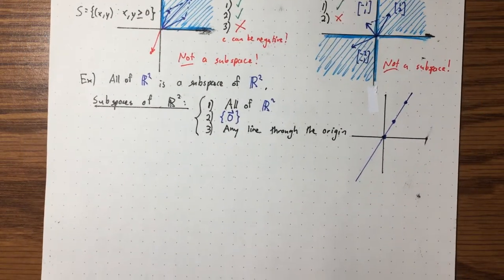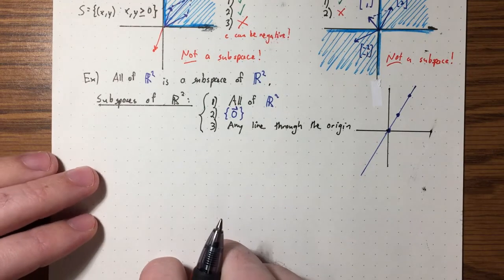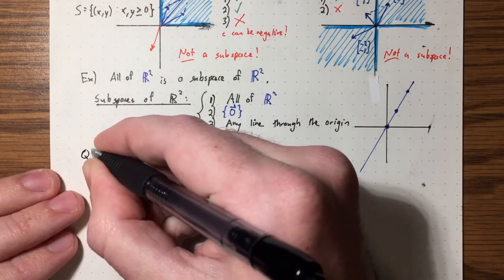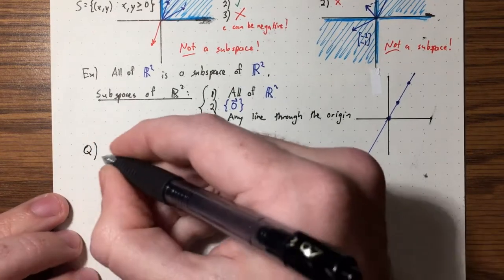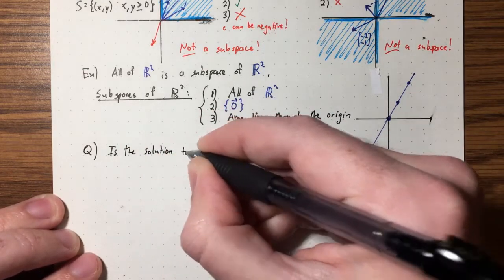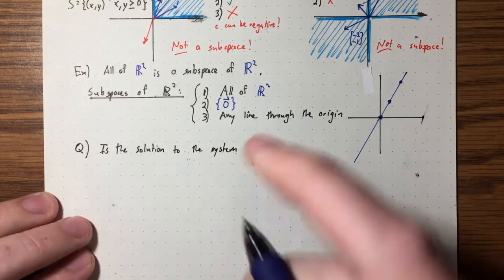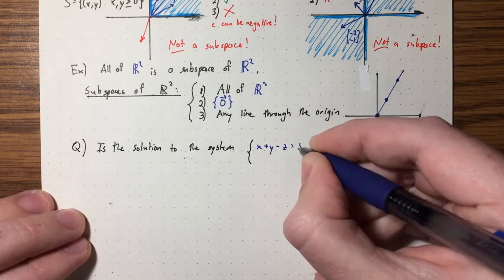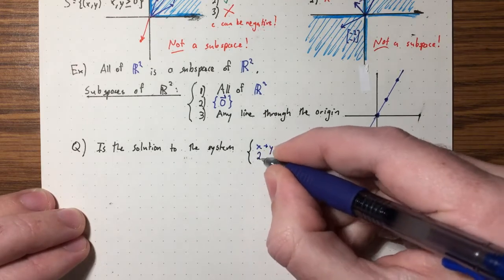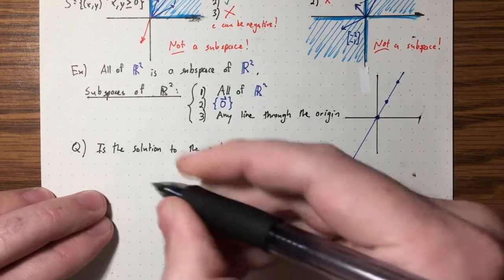If we go to R³, we can get more interesting subspaces — we also get planes through the origin, as well as lines through the origin. Let's look at another example. Is the solution set of the system X + Y - Z = 5 and 2X + 3Y = 8 a subspace?